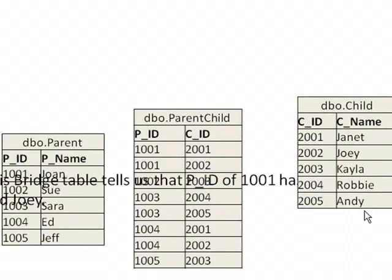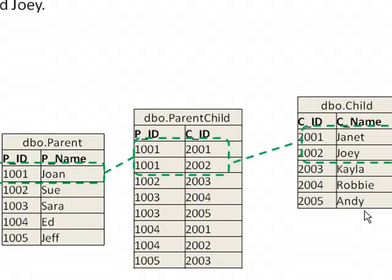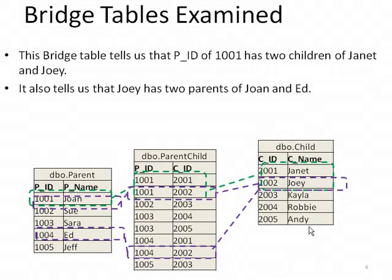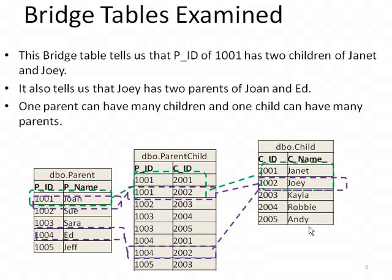Let's introduce the bridge table. The bridge table tells us that parent ID 1001 has two children, 2001 and 2002, which is Janet and Joey. It also tells us that Joey has two parents. As we can see, 2002 maps twice to the parent-child table, showing a parent of 1001 and 1004, which is Joan and Ed. One parent can have many children, as well as one child can have many parents. Therefore, the parent to the child table is a many-to-many relationship.